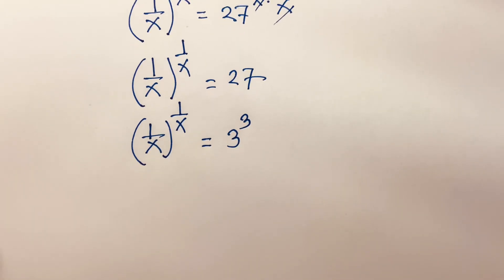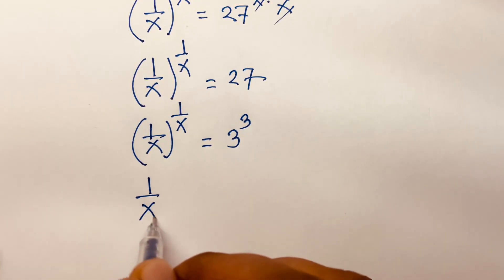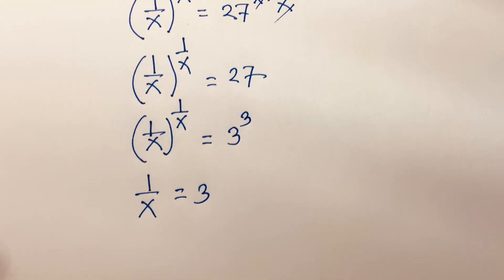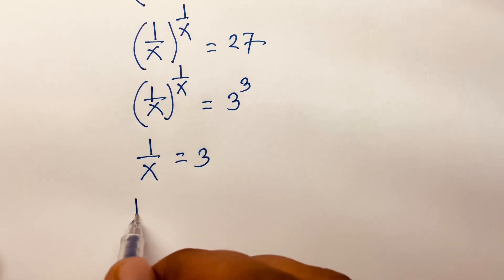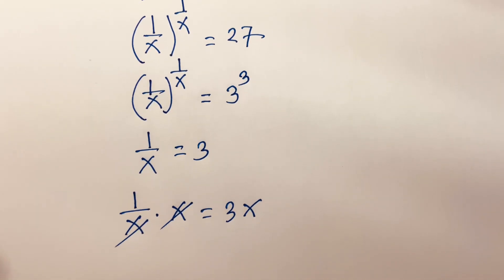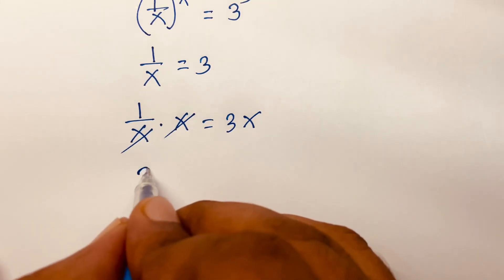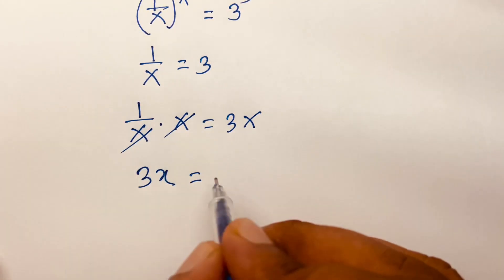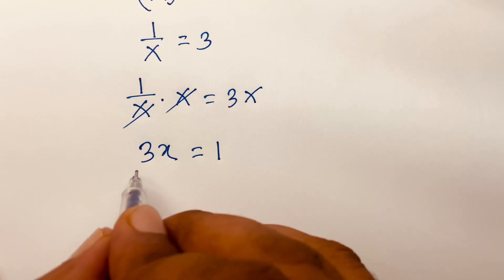So 1 over x equals 3. Then I multiply both sides by x. Then x times x cancel, so we'll find out 3x equals 1.